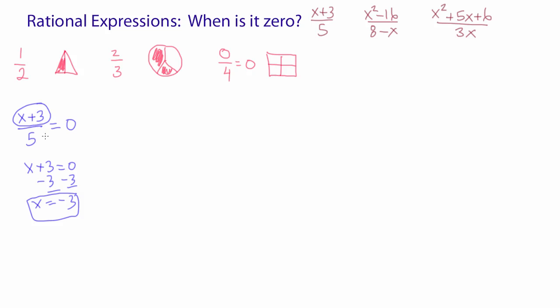This tells us that when we plug it back into the expression, the expression will be zero. Let's test that. So my expression is x plus three over five. And when I plug in negative three into the expression, I get zero over five. Same idea as this first picture that we drew here. So let's look at the next problem.